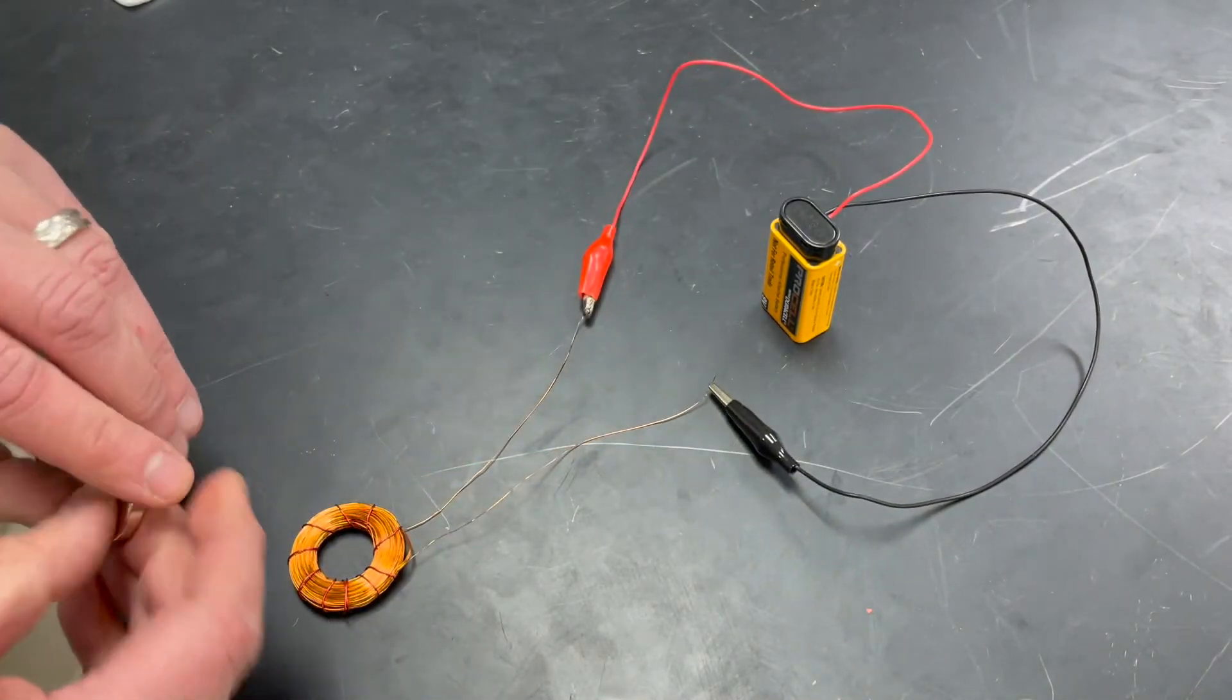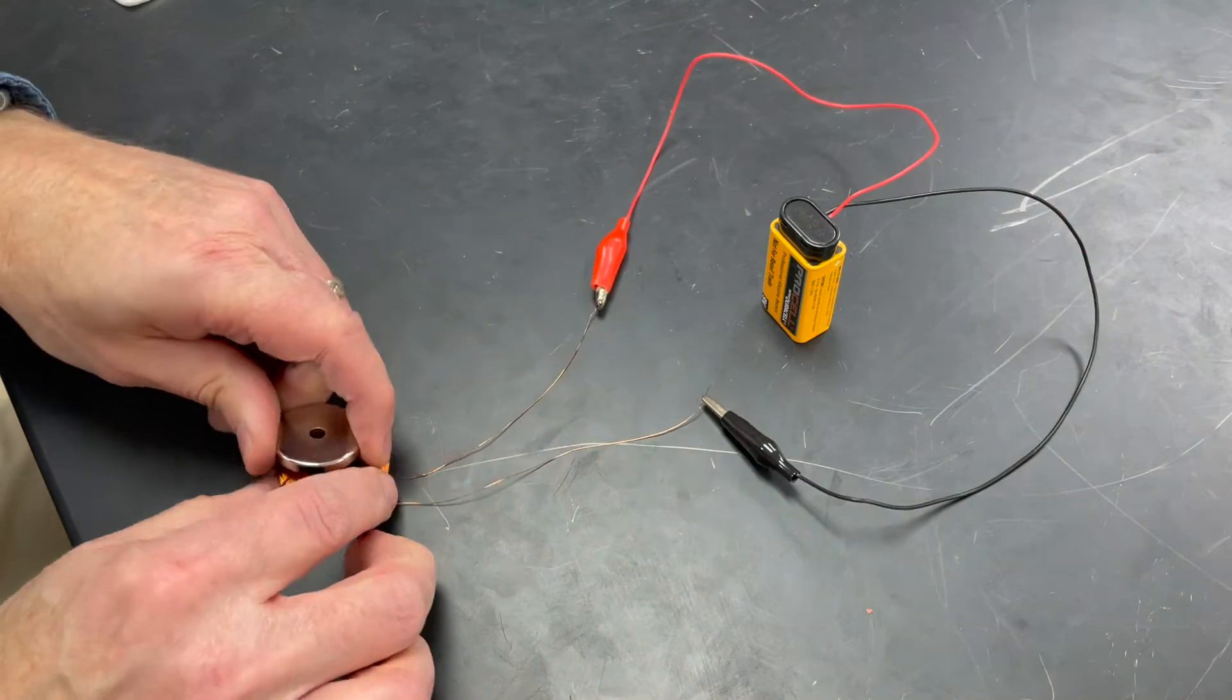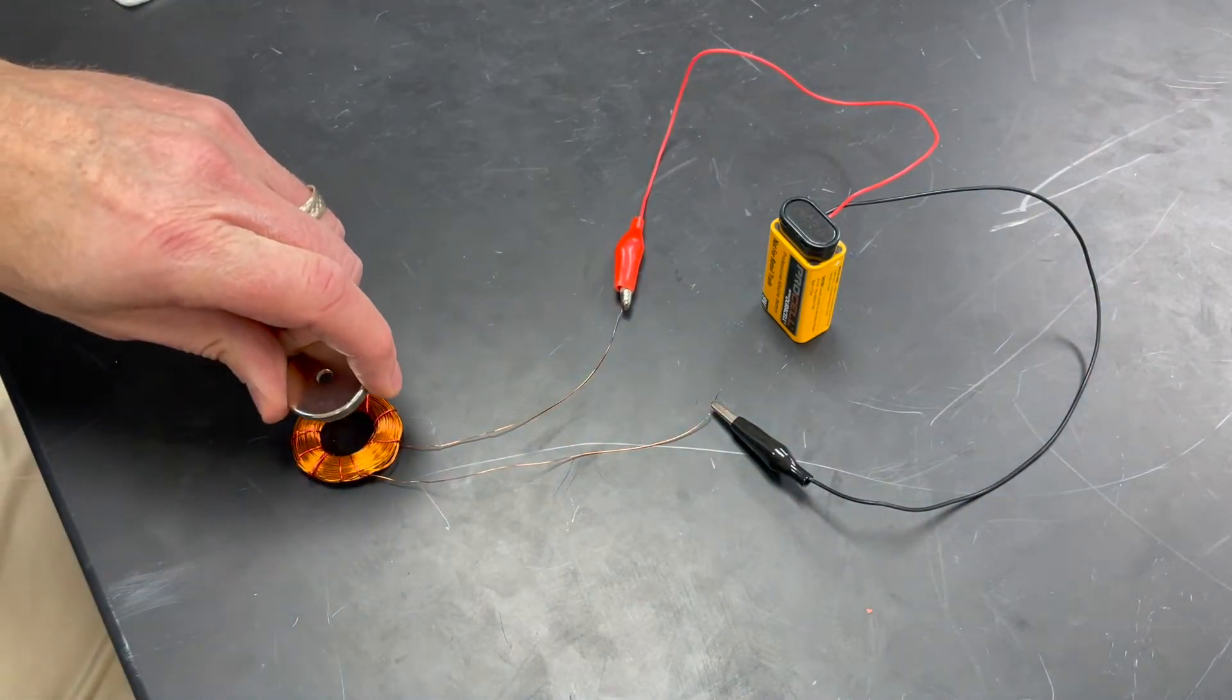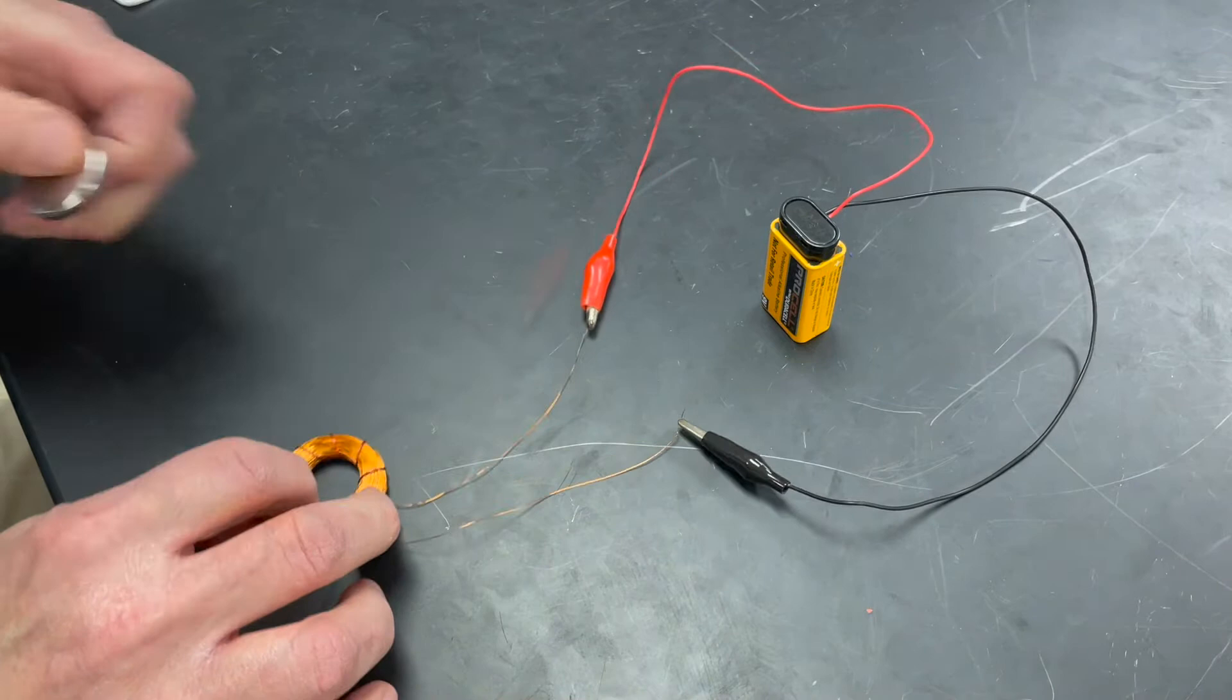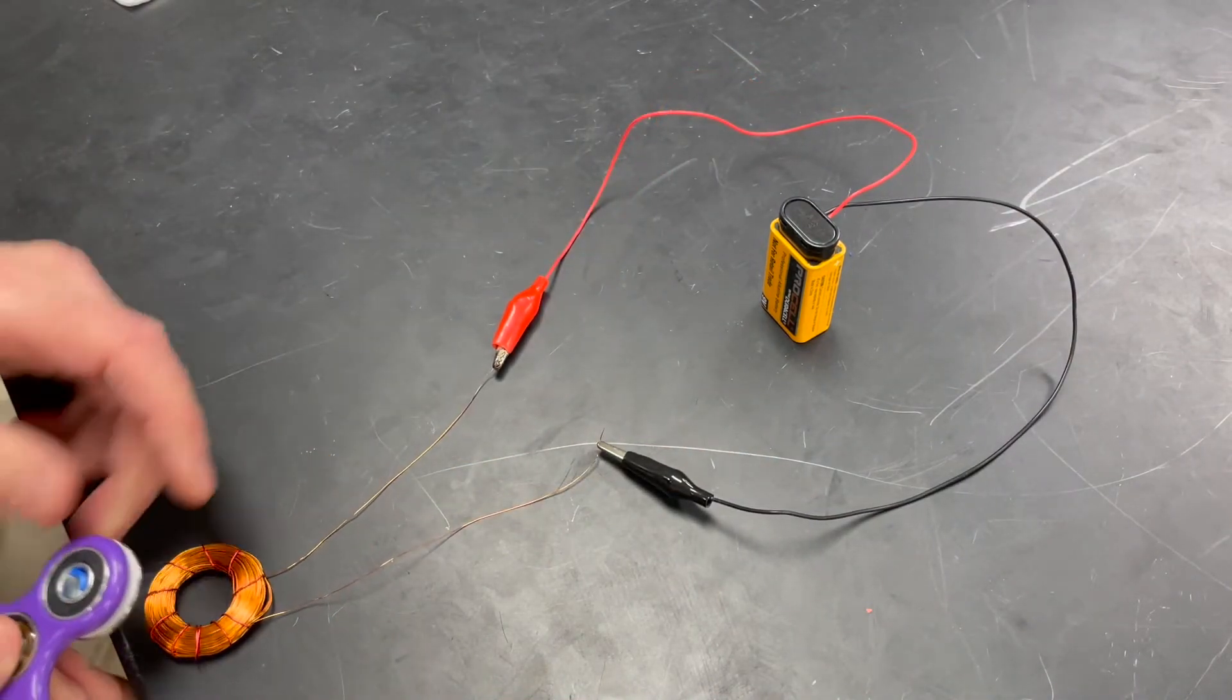It can attract or repel the neodymium magnet. This is what we call an electromagnet. But can we use the strength of this electromagnet to cause something to move in a useful way?